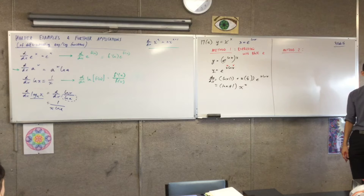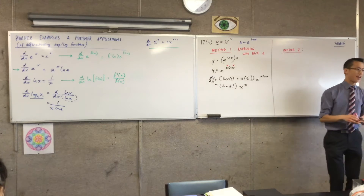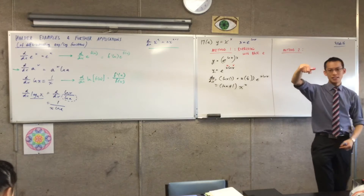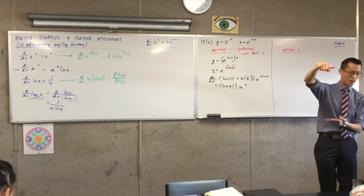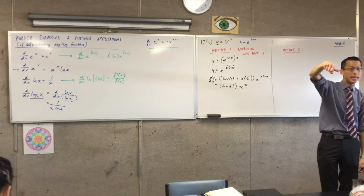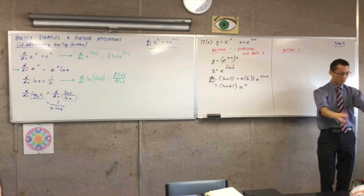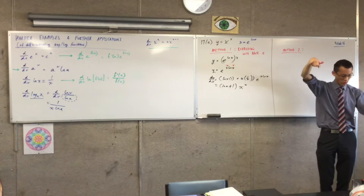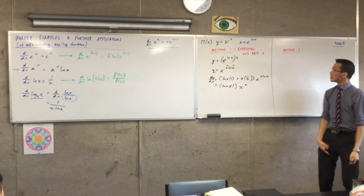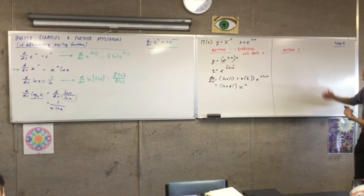It becomes really useful when you're solving related rates questions — things like, I'm pouring an amount of water into a basin, and the rate at which I pour in the water is related to the rate at which the water increases inside the basin. So I've got one rate here, another rate there, and they're related to each other. This method I'm going to show you is kind of connected to that.